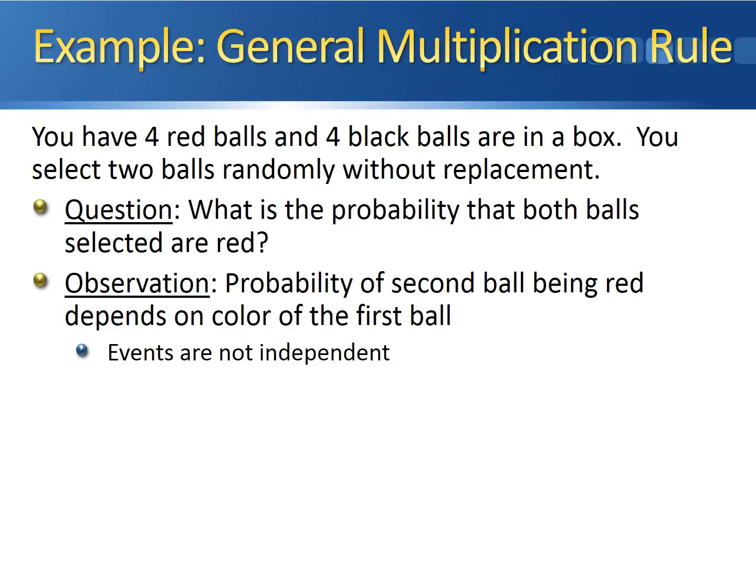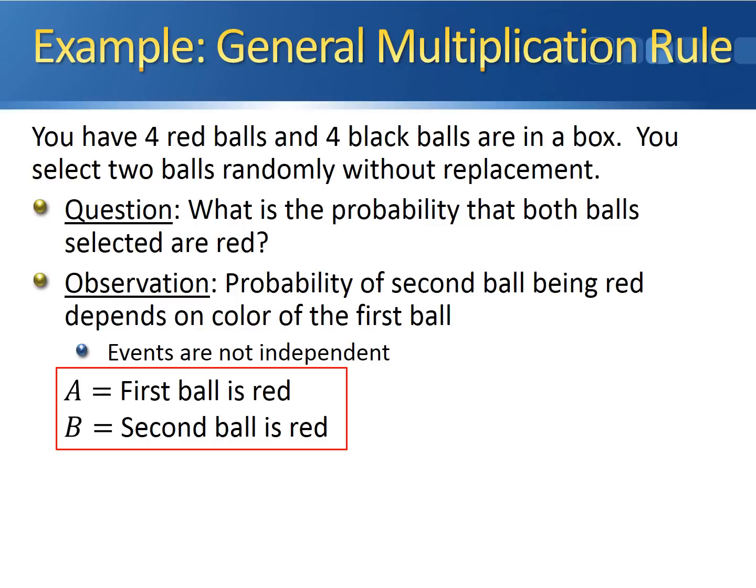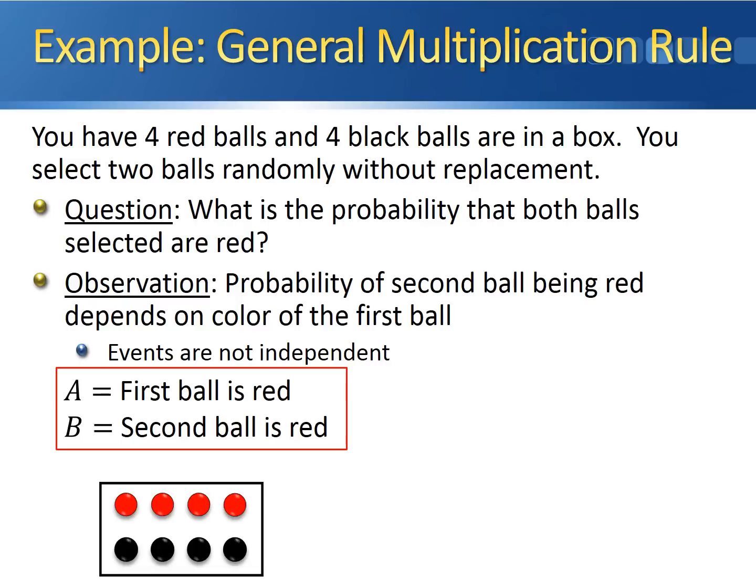The events are not independent, so we're going to apply the general multiplication rule. Let A be the event that the first ball is red, and let B be the event that the second ball is red. Here's our box with four red balls and four black balls. The probability that A occurs is equal to four over eight — you have four red balls in the box, eight balls altogether.